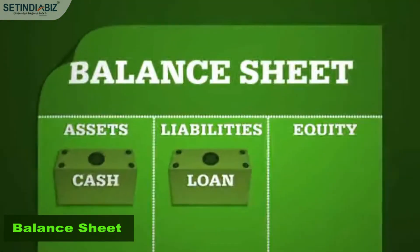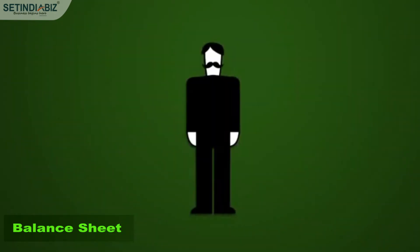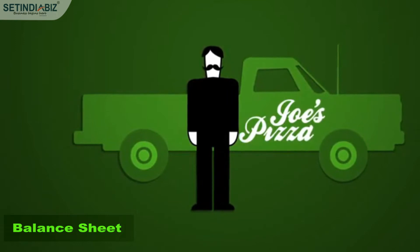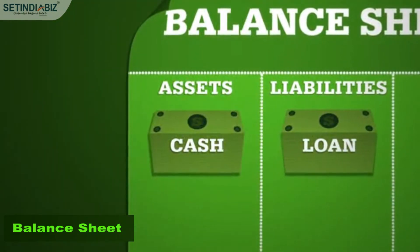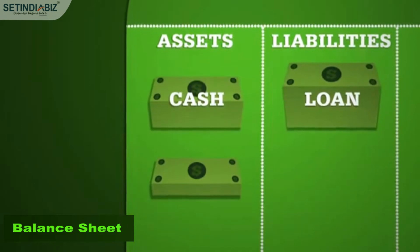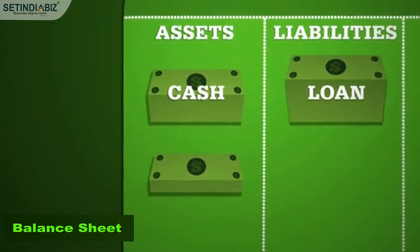The balance sheet remains in balance. Joe used the cash to buy a truck and started a pizza delivery service. His cash assets decrease, but that's balanced by an increase in other assets — a new truck.